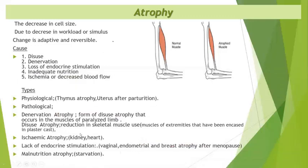What is atrophy? Atrophy is the decrease in cell size due to decrease in workload or stimulus. The change is adaptive and reversible. The causes are disuse, denervation, loss of endocrine stimulation, inadequate nutrition, and ischemia or decreased blood flow.